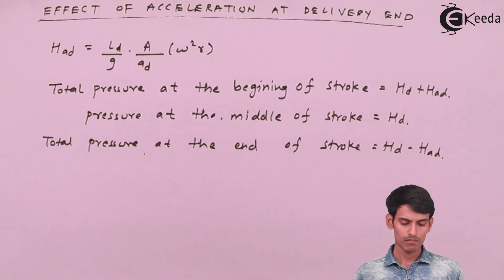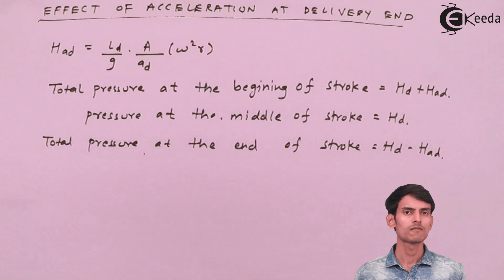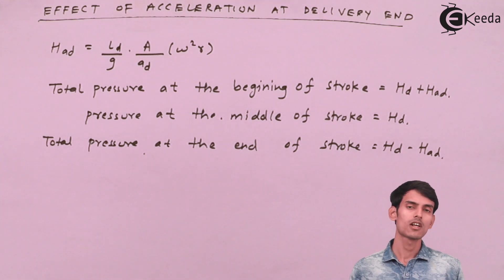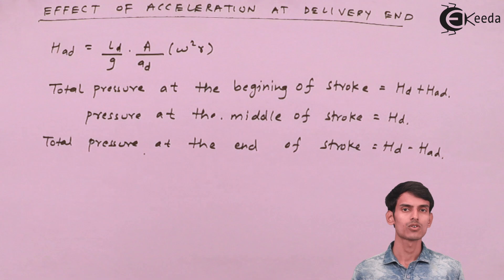This is the distribution of pressure at the delivery side. Similarly, we had the distribution of pressure at the suction side. Now let's draw the graph for the effect of acceleration at the delivery side, and then we'll club both the graphs and see how the whole graph looks.